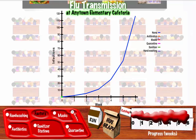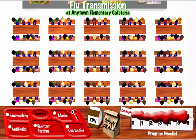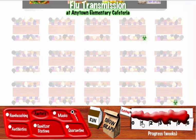When you are done viewing the graph, click the Hide Graph button. You can also click on each specific week in the Progress bar to see and count the number of students infected at that time.